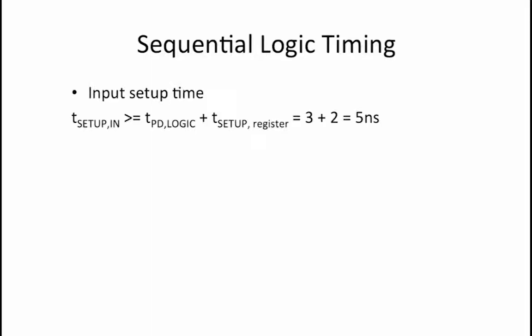The n input must be stable and valid long enough before the rising clock edge for it to propagate through the combinational logic and arrive at the register in time for it to set up. So tsetup of n is greater than or equal to tpd of the logic plus tsetup of the register.